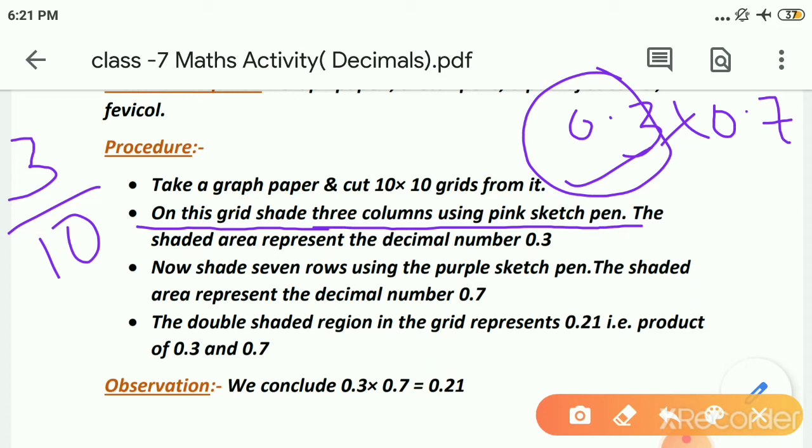Actually our question was 0.3 by 0.7. So here first I am taking this first number 0.3. Now 0.3 we know it is 3 by 10. So children here 10 vertical and 10 horizontal lines. So I have to use two different colors. So here I am taking pink sketch pen first. So I have to shade 3 columns. I can shade rows, is my choice. But one time rows, one time columns. So first I am shading 3 columns with pink sketch pen. The shaded area will represent us the decimal number 0.3.